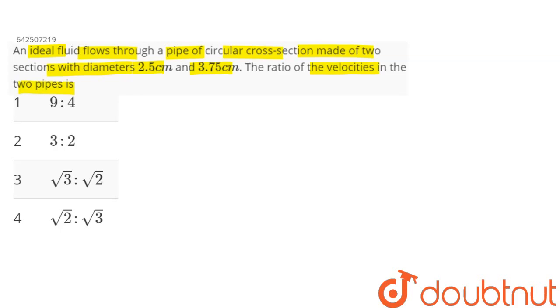So here we can say, let's say this is our pipe. Here diameters are given - this diameter as D1, this diameter as D2. The diameter of the pipe is given. Now we need to find the ratio of the velocities crossing these two points, that is V1 by V2.